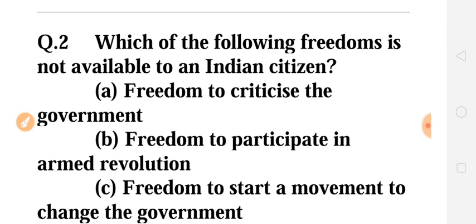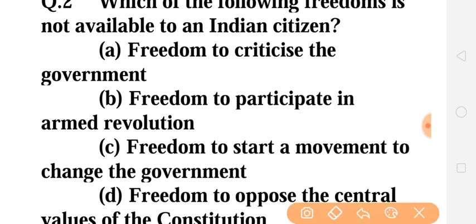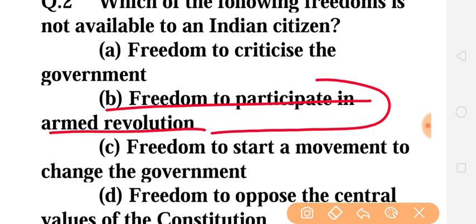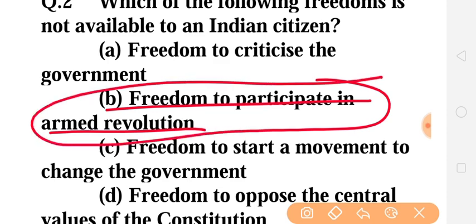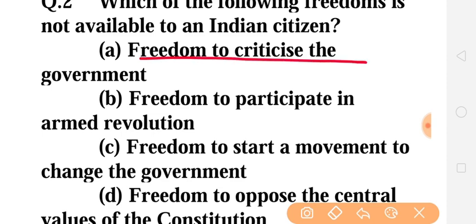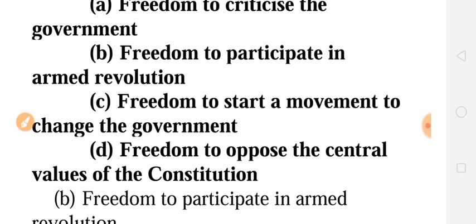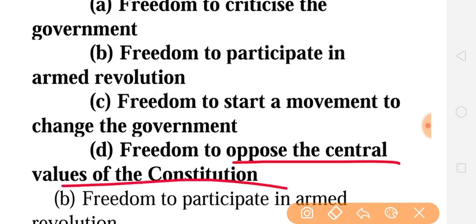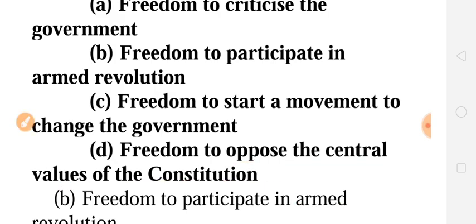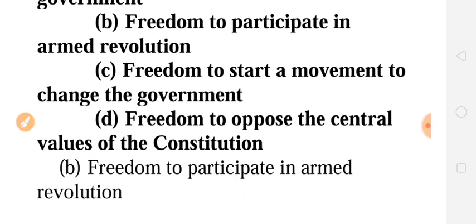The next question is: which of the following freedoms is not available to an Indian citizen? The answer is: freedom to participate in armed revolution. Armed revolution means violence, so we are not free to do that. We can say the government is not working the right way, and we have freedom to start a movement to change the government, but it must be peaceful. We can also oppose the central values of the constitution if we don't feel it's right, but not through violence.